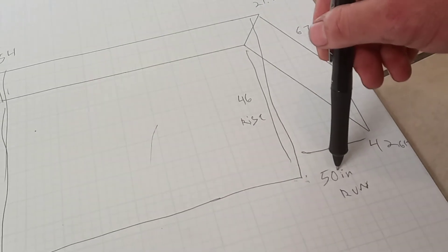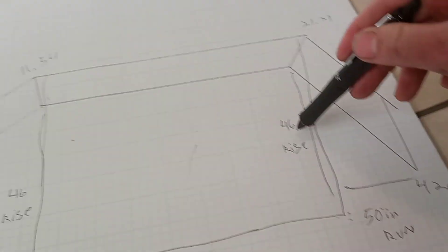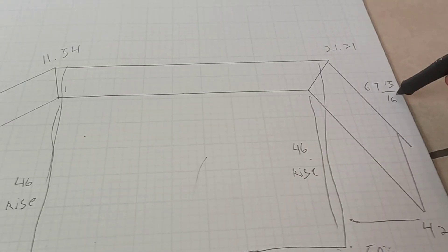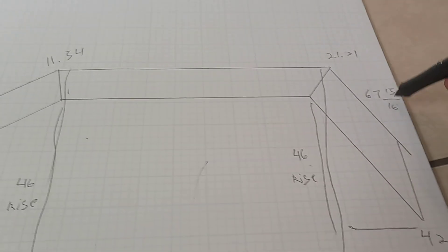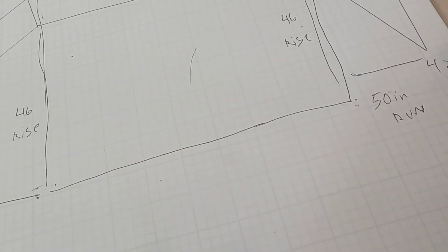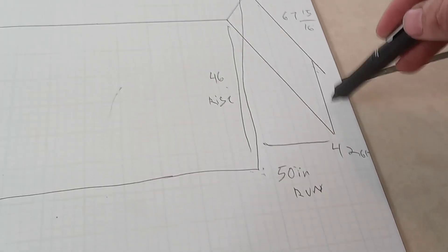We put a 50-inch run and 46 rise in the calculator. It gives us 67 15/16 diagonal. That's from this point to this point. That gives you 42 degrees, 42.61 degrees from here to here.